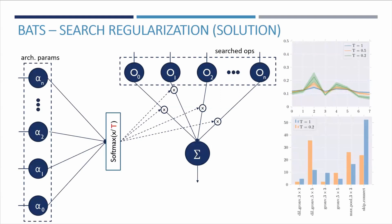This behavior also aligns with the evaluation procedure where a single operation will be selected, reducing the performance discrepancy between the search, where the network pulls information from all paths, and evaluation.